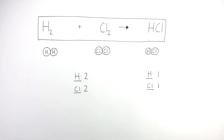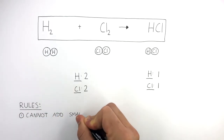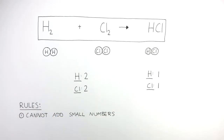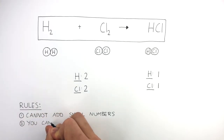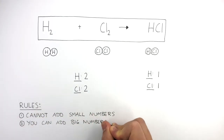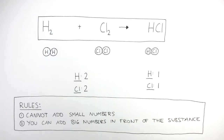So we can see the equation is not balanced. Two rules that you must always apply when balancing equations: one, you cannot add small numbers at any point to the molecules. For example, you can't make the small two next to the hydrogen disappear or change it to a three or a four. You cannot change, add, or take away anything with regards to the small numbers.